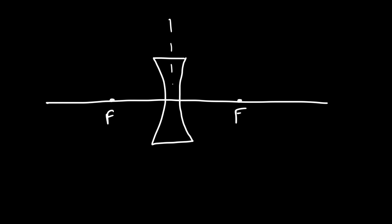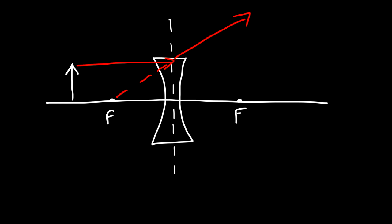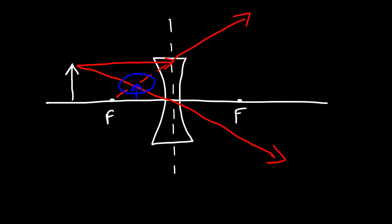Let's start with a divergent lens. This is the focal point, and let's place the object here. The first ray goes from the object to the center of the divergent lens and continues in that direction. The second ray goes from the object through the center of the lens. The image is located where the rays appear to converge — but they don't actually converge. So what we have is a virtual image: reduced in size but upright.